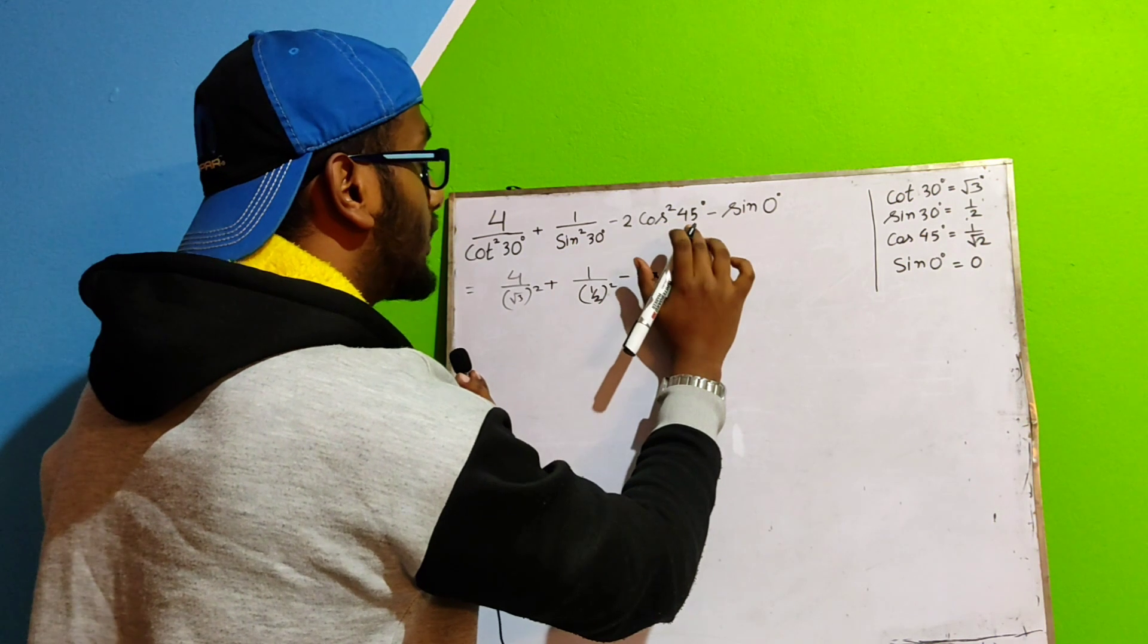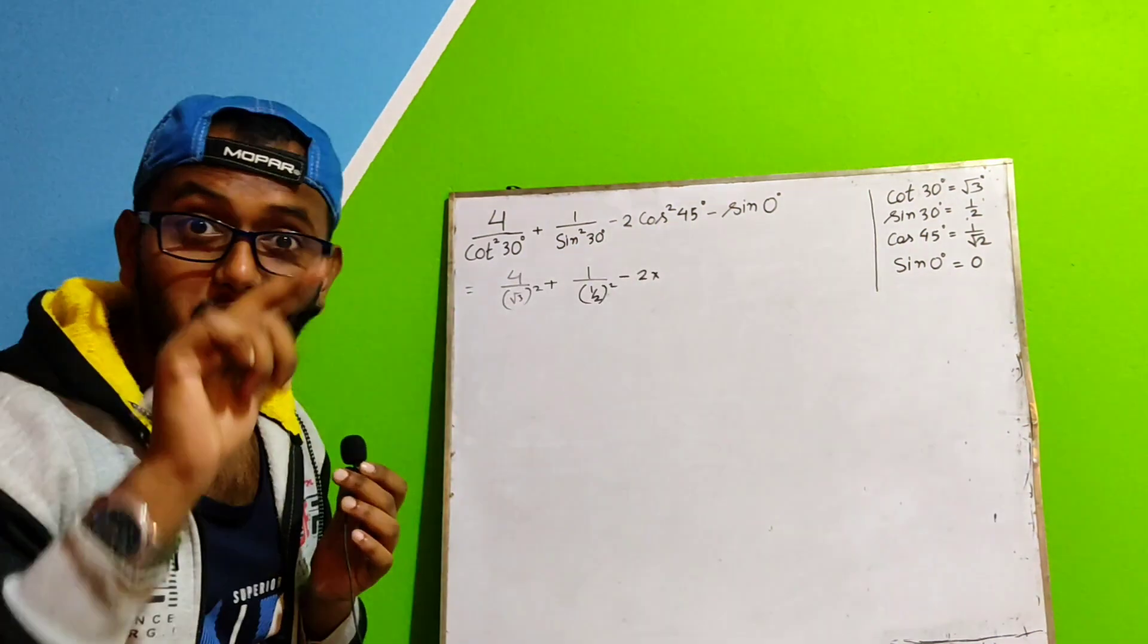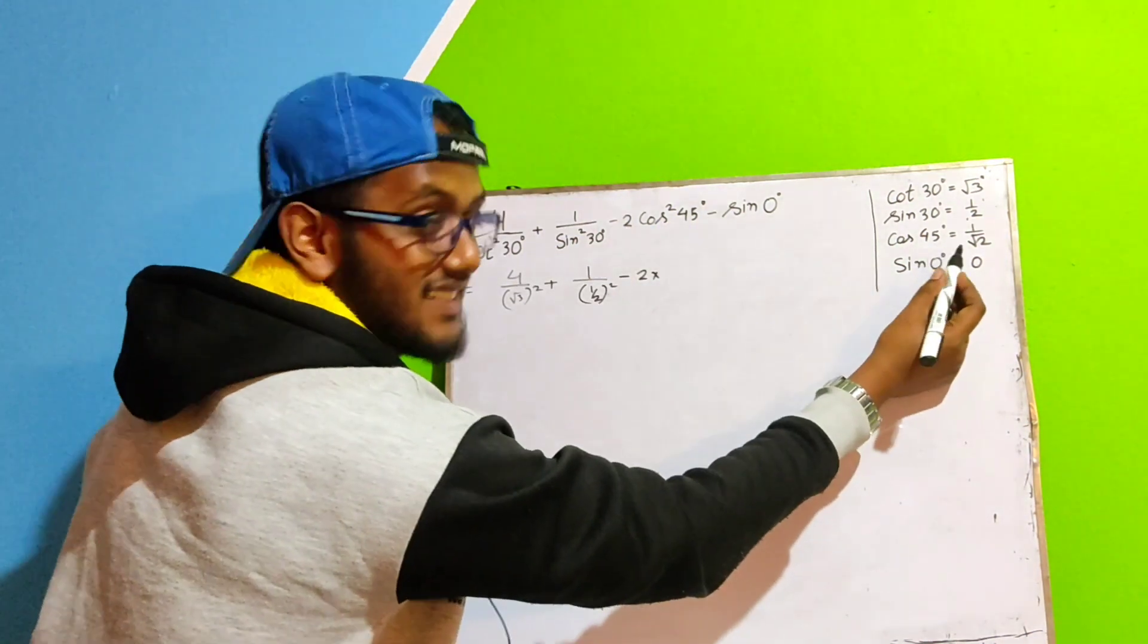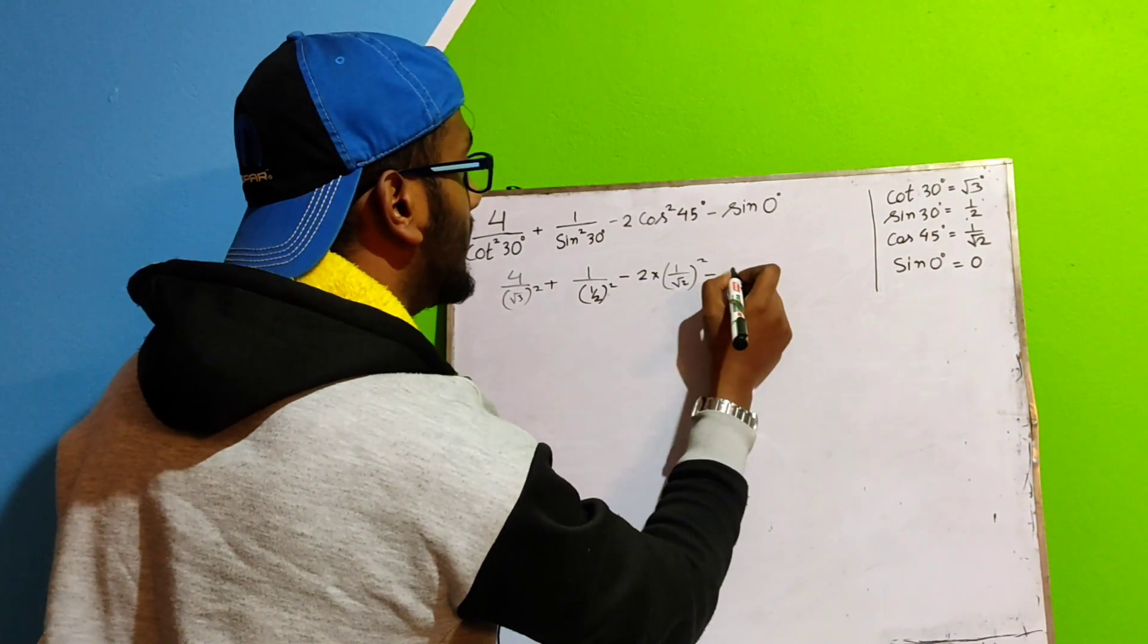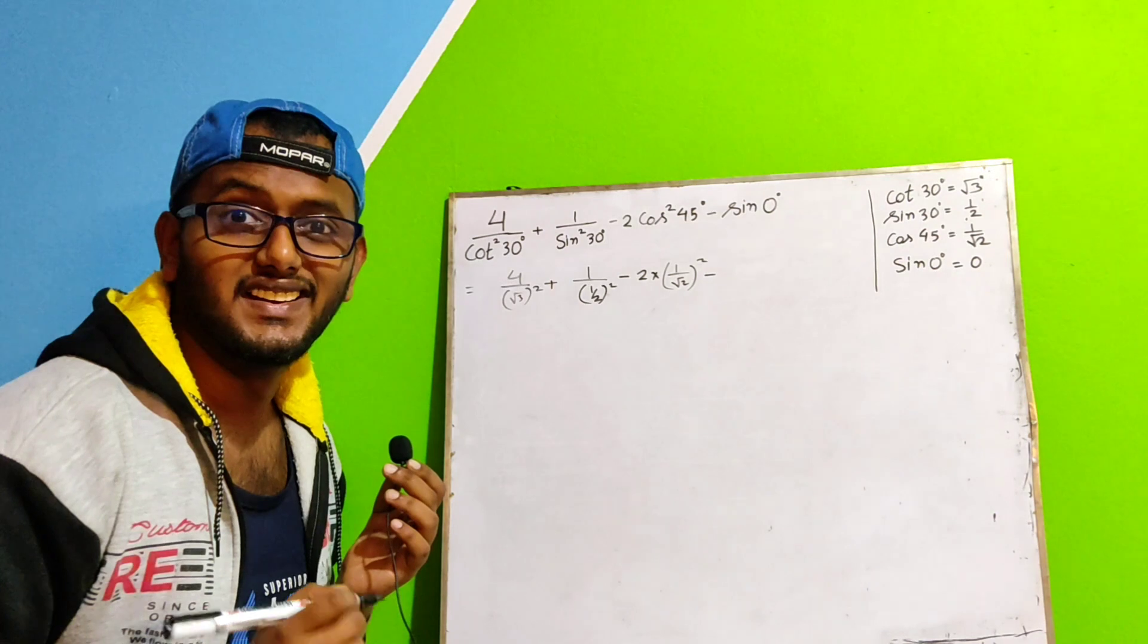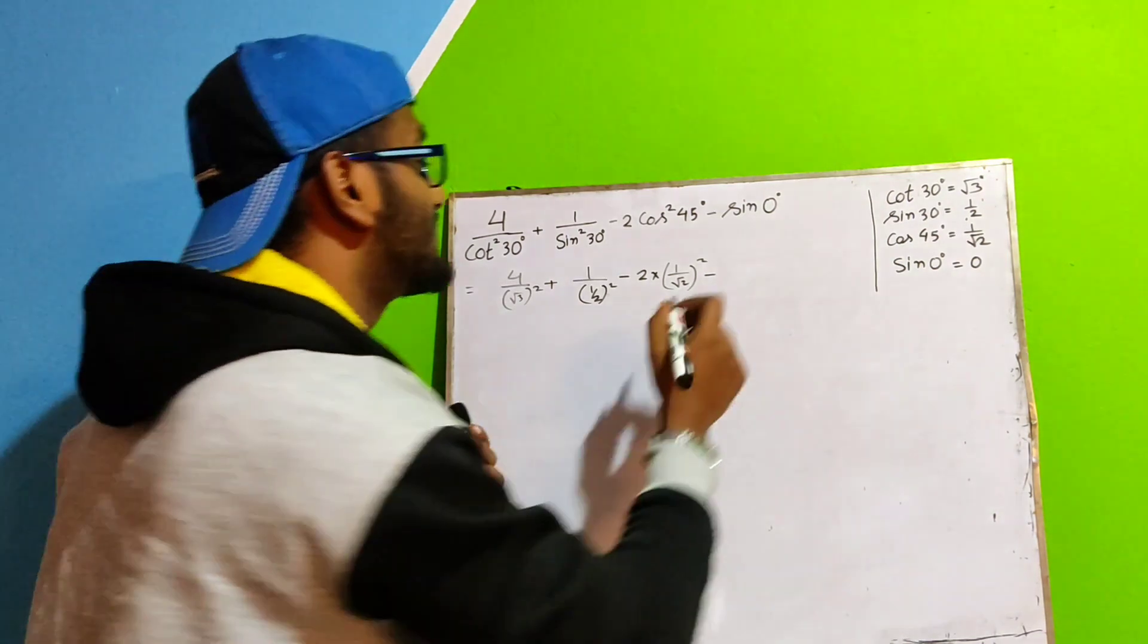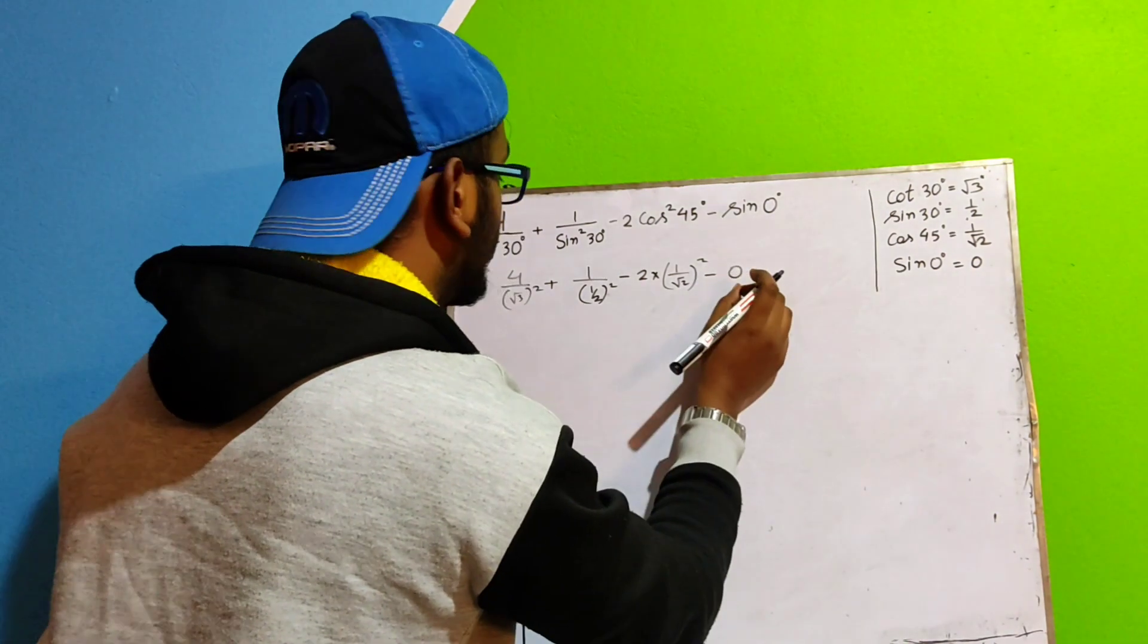What is cos 45°? Cos 45° is 1 by root 2. So 1 by root 2 whole square minus. What is sin 0°? Sin 0° is 0. So this problem becomes 0.